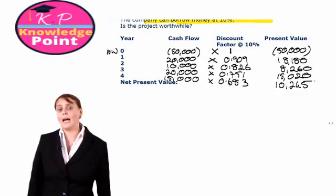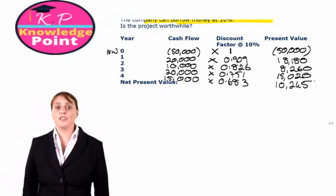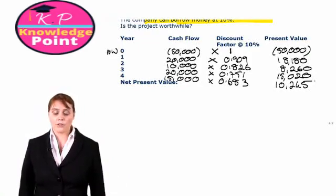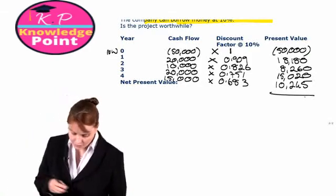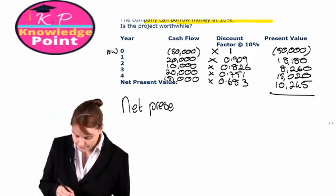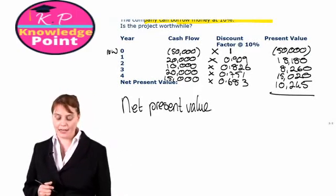So now we have made all of our cash flows comparable. We have discounted them all back to their present value. So to find the net present value of this project, we just sum together all of those cash flows.